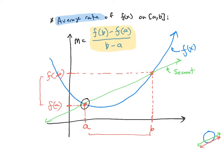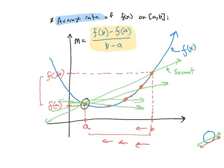The idea is this: we take b and slide it closer to a. This point starts traveling backwards, and we calculate that slope. Then we move it backwards some more, and then again. These are all secant lines. We keep moving b backwards along the curve, getting closer and closer to a. As we draw this succession of secant lines, we get closer and closer to what we're going to call a tangent line.